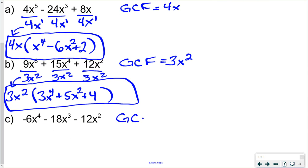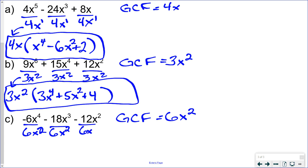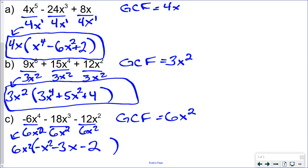Last example: the greatest common factor of 6, 8, and 12 is 6 — wait, actually it would be 2. For the x terms, x squared is the smallest power, so we divide each by 6x squared. Negative 6 divided by 6 is negative 1; x to the fourth divided by x squared is x squared. Minus: 3 minus 2 gives x to the first, which is just x. Minus: x squared divided by x squared is 1. You can check any of these answers by distributing back in to confirm you get back where you started.